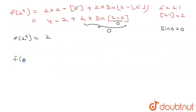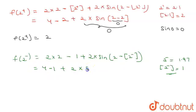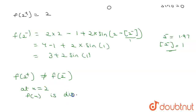Now we check f(2−). Let's suppose a value like 1.97, so the greatest integer function of 1.97 equals 1. Then f(2−) = 2×2 − 1 + 2×sin(2 − 1) = 4 − 1 + 2×sin(1) = 3 + 2 sin(1). Since f(2+) ≠ f(2−), we can say that at point x equal to 2, the function f(x) is discontinuous.